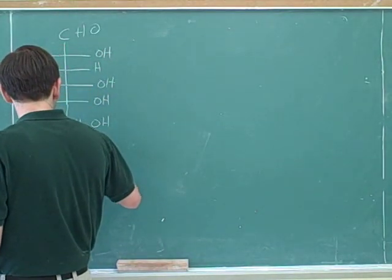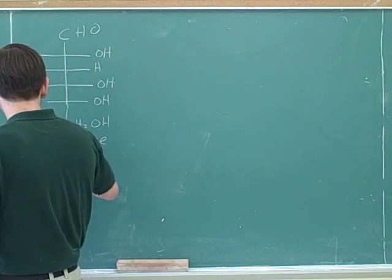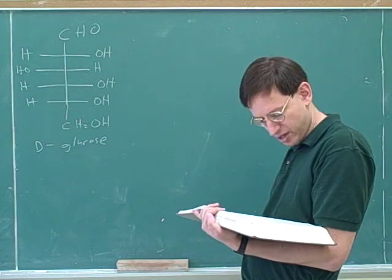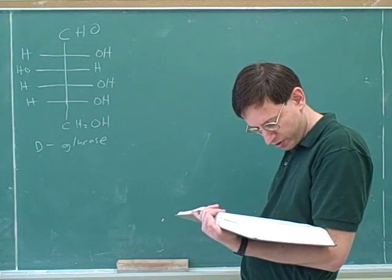D or L? D. And which way does D-glucose rotate light? We do not know. Yeah, we can't tell. The D doesn't tell you which way it rotates light. You'd have to look at whether it's plus or minus.